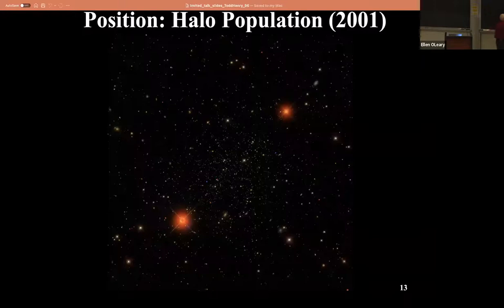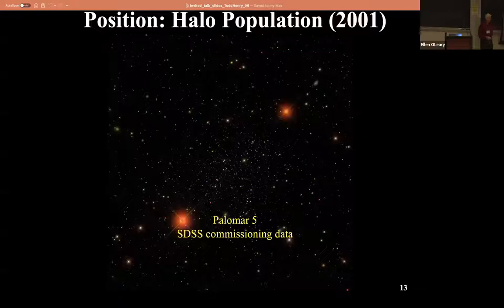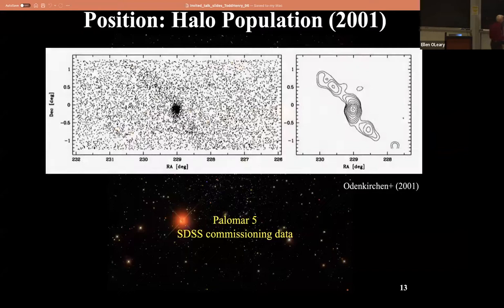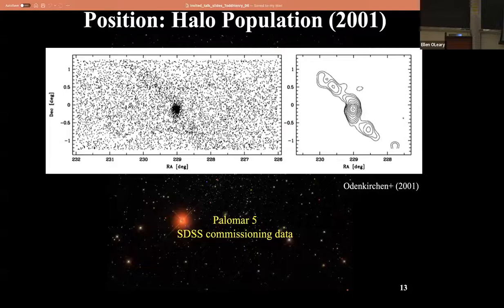Here's a modern example. That's a globular cluster called Palomar 5, from commissioning data from the Sloan Digital Sky Survey. Just by measuring positions, that's all you have to do. Odenkirchen et al. mapped the dots and did a contour plot of the location, and you get a very funny structure - a globular cluster in the middle with tails going off in two directions, simply astrometrically measuring the position of each star. They found these tails stretch over two degrees on the sky - about five full moons, roughly the size of your fist.